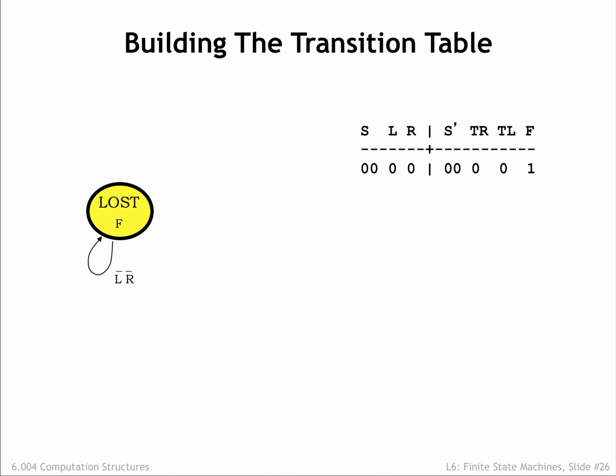We'll start with the lost state. So if the FSM is in this state, the F output should be 1. If both antenna inputs are 0, the next state is also lost. Assigning the lost state the encoding 0,0, we've captured this information in the first row of the table.